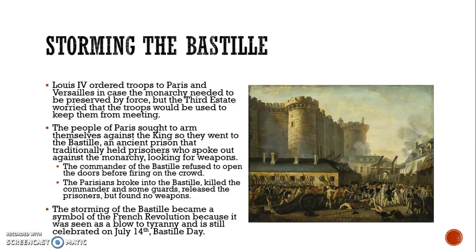Louis XVI ordered troops to Paris and Versailles in case the monarchy needed to be preserved by force, worrying about the National Assembly forming. The third estate feared the troops would be used to stop them from meeting. The people of Paris sought to arm themselves and went to the Bastille, an ancient prison that traditionally held prisoners who spoke out against the monarchy, looking for weapons. The commander refused to open the doors before firing on the crowd. The Parisians broke in, killing the commander and some guards, and releasing the prisoners, though they found no weapons. The storming of the Bastille became a symbol of the French Revolution, celebrated every July 14th as Bastille Day.